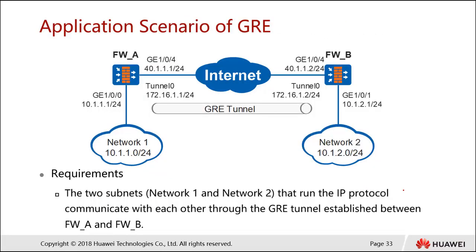That's the client-initiated L2TP scenario. The second scenario is GRE. For the GRE scenario, we assume two branches need to be connected to each other. We have Network 1 (10.1.1.0 segment) and Network 2 (10.1.2.0 segment). We create a GRE tunnel to allow the two branches to communicate. The public IP addresses are in the 40.x.x.x range, and the tunnel address is 172.16.x.x.